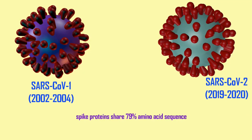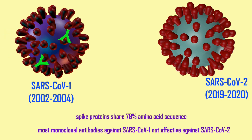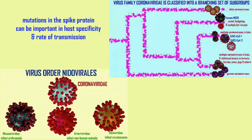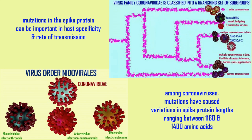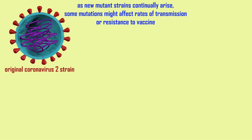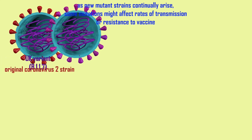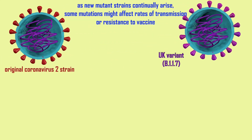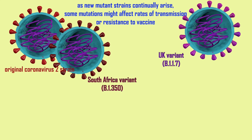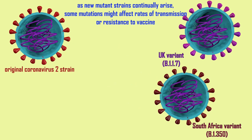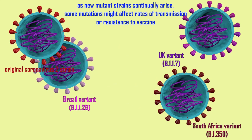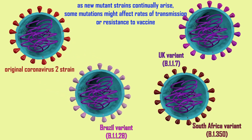When one considers coronaviruses in general, it is observed that mutations in the spike protein can be important in determining host specificity and the rate of transmission. Among the coronaviruses, mutations have caused variation in the length of the spike protein ranging from a little over 1,100 amino acids to more than 1,400 amino acids in length. So it is not surprising that, A, there are mutations which have changed the spike protein in the coronavirus causing COVID-19, or that, B, there is preliminary evidence that some of these mutations have effects on the rates of transmission and potentially the efficacy of antibodies and vaccines against them.